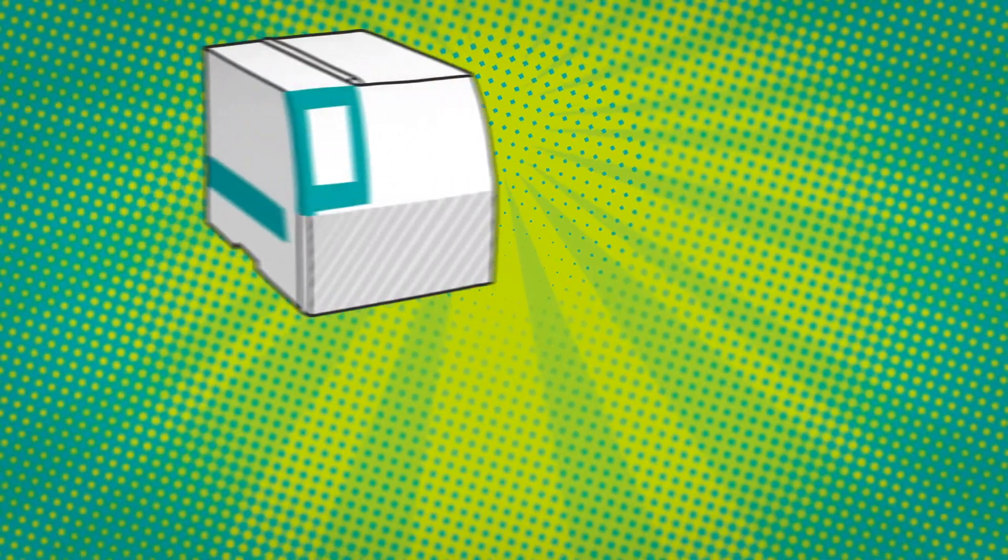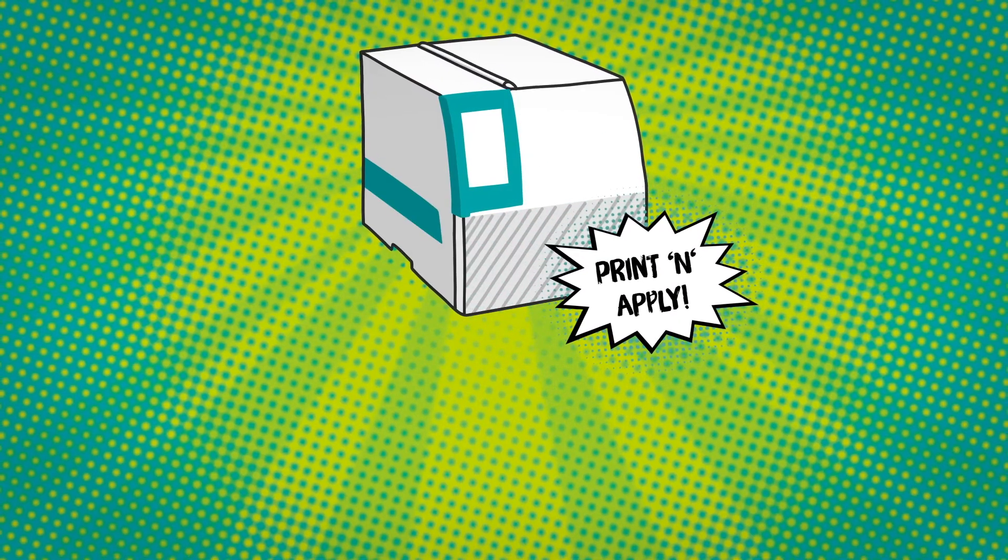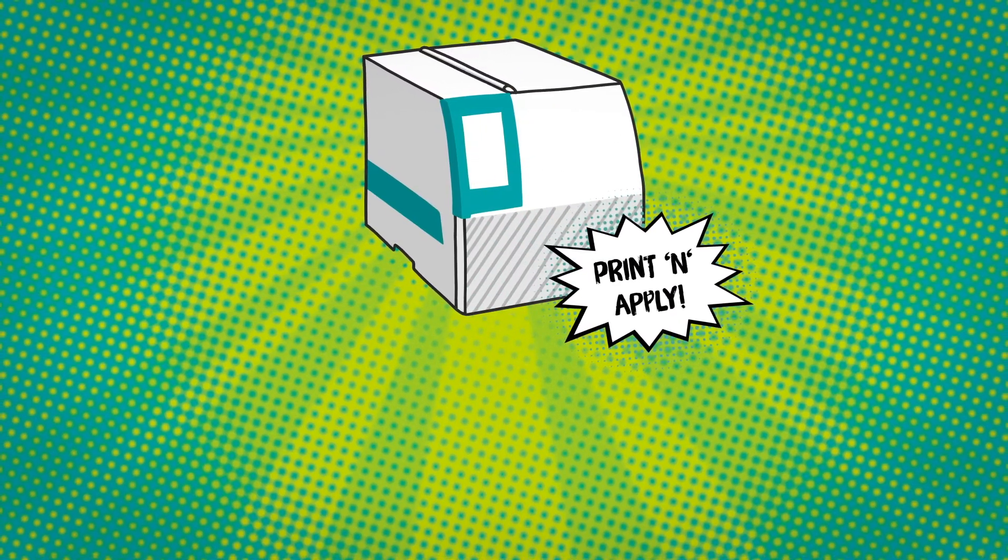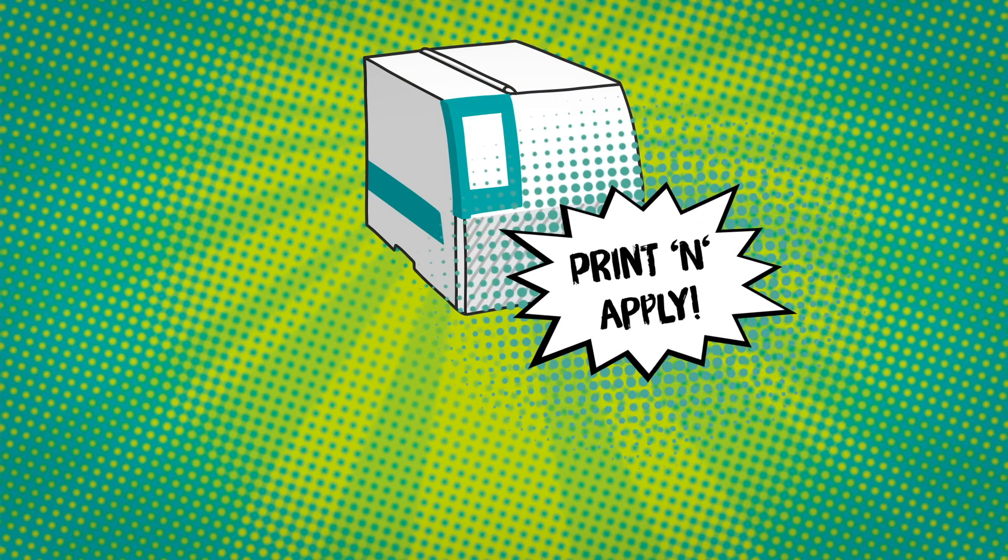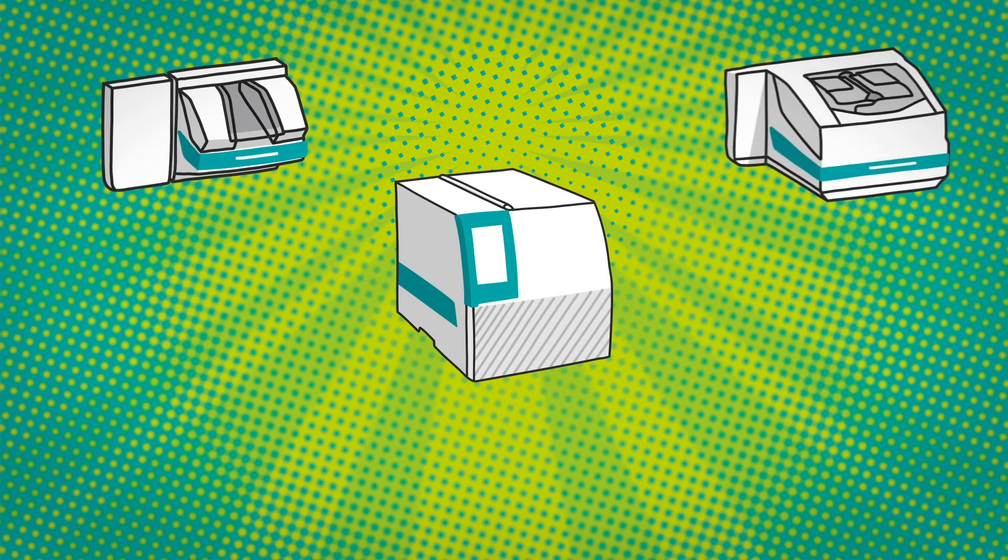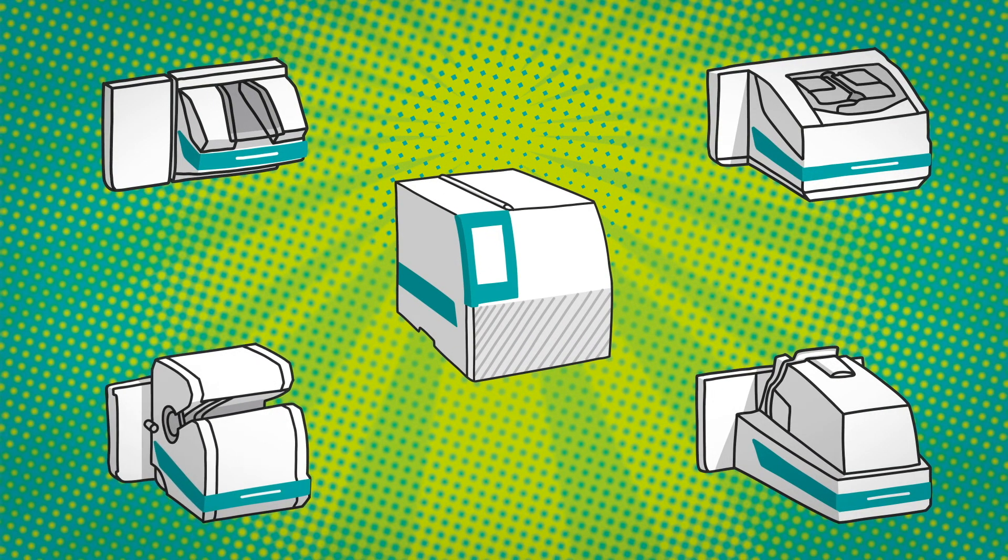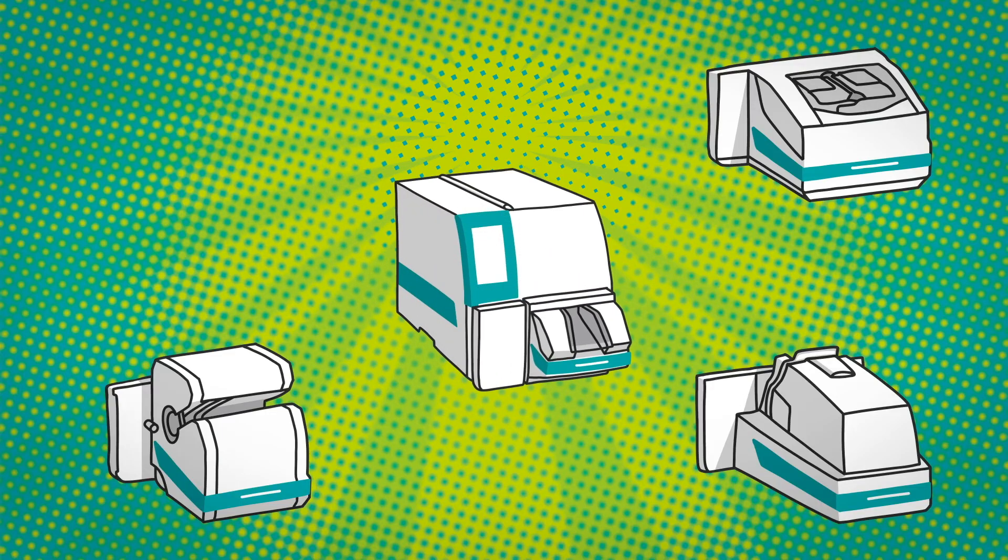The Thermomark E-Series is the world's first modular system to automate and combine printing and applying in just a single efficient process step. To do this, the standard thermal transfer roll printer is simply connected to one of four applicators.